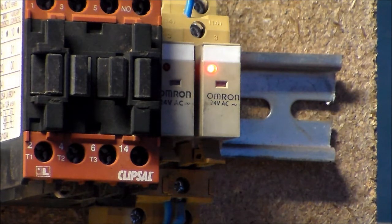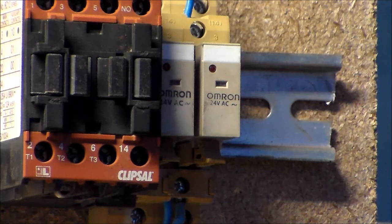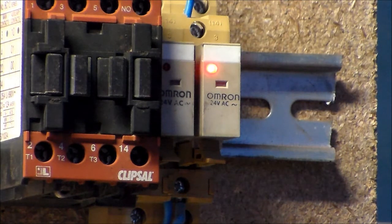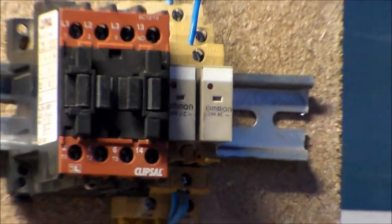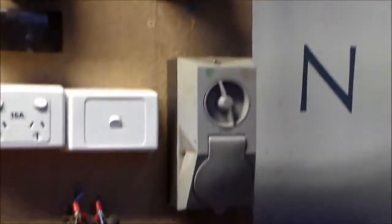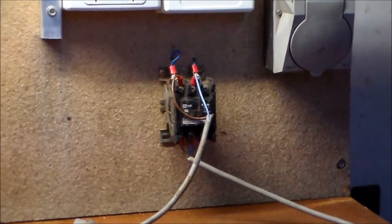A little red light comes on. That's just that little Omron 24 volt AC relay. And that fella there actually fires the 24 volts AC from the transformer into this contactor.